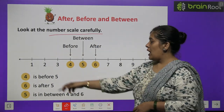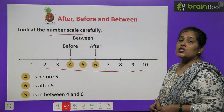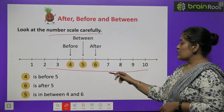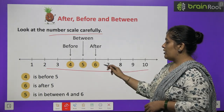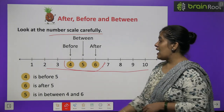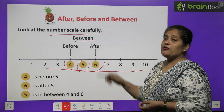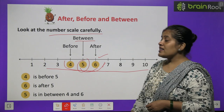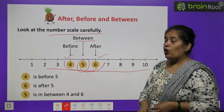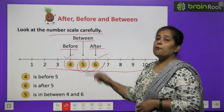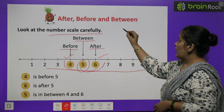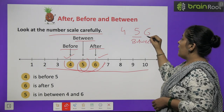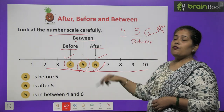Look at the number scale carefully. Yahan par aapko ek number scale diya hua hai: 1, 2, 3, 4, 5, 6, 7, 8, 9, and 10. They have chosen three numbers — the middle number is number 5. So 5 ke baad kya aata hai? That is number 6 — that is the 'after' number. Aur 5 se pehle kya hai? Number 4 — that is 'before'. So number 6 is 'after', number 4 is 'before', and number 5 is 'between' 4 and 6.